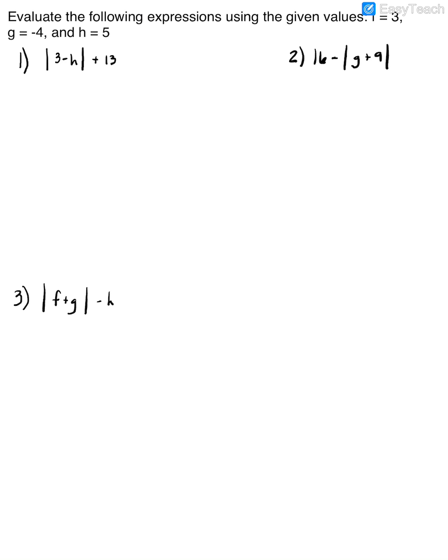Now we have some expressions to evaluate that contain absolute value bars, and we need to take those into consideration. Looking at the absolute value of 3 minus h, the first thing I need to do is plug in the values I have for the variables. Since I see there's an h, I'm going to plug in the value that represents h, which is 5.